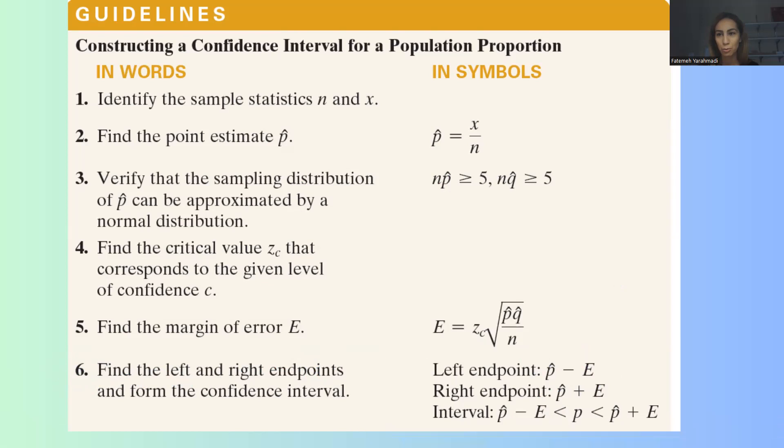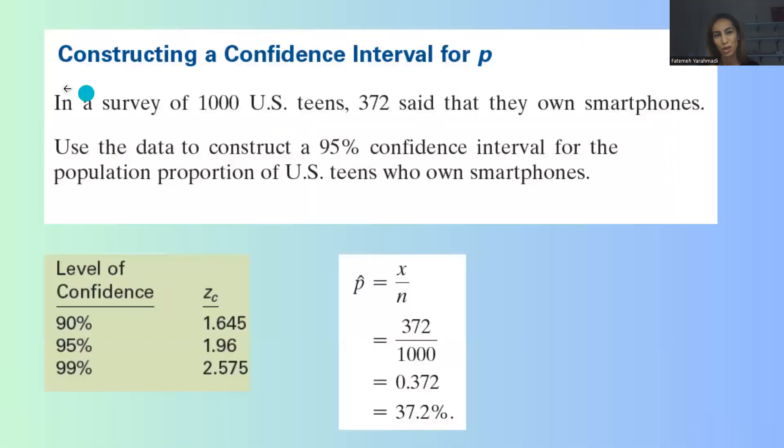We're going to go back to the example of US teens who own a smartphone and build a confidence interval for it. The question says construct the confidence interval for population proportion. In a survey of 1000 US teens, 372 said that they own smartphones. Use the data to construct a 95% confidence interval for the population proportion of US teens who own smartphones.